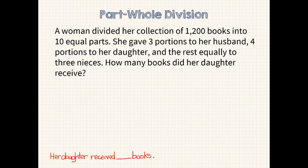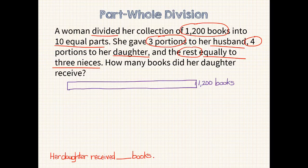What is the important information in this problem? 1,200 books are divided into 10 equal parts. 3 portions were given to her husband, 4 parts to her daughter, and the rest equally to 3 nieces. Again, this is a division problem, so we'll start with our whole of 1,200 books. Now we have to divide it. How many ways? That's right, 10.